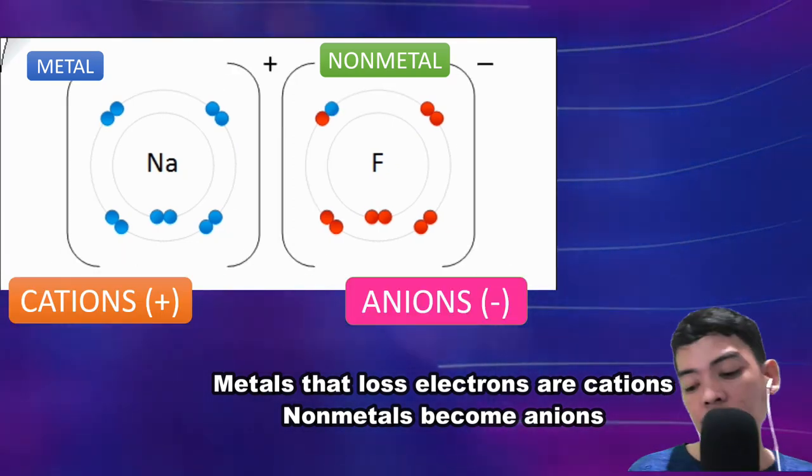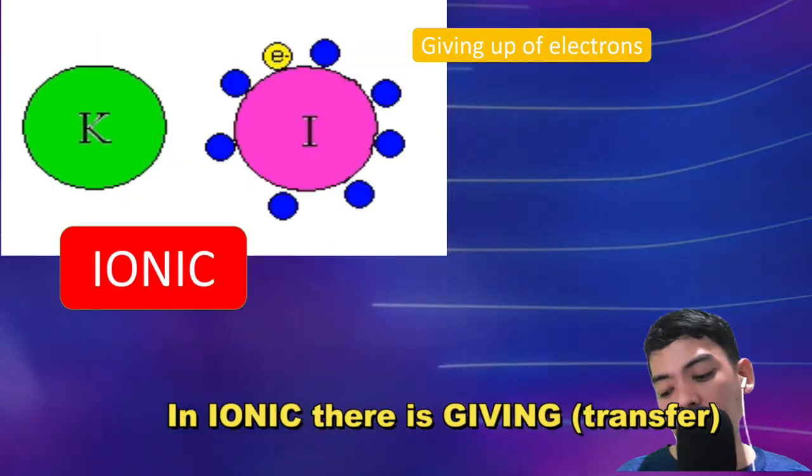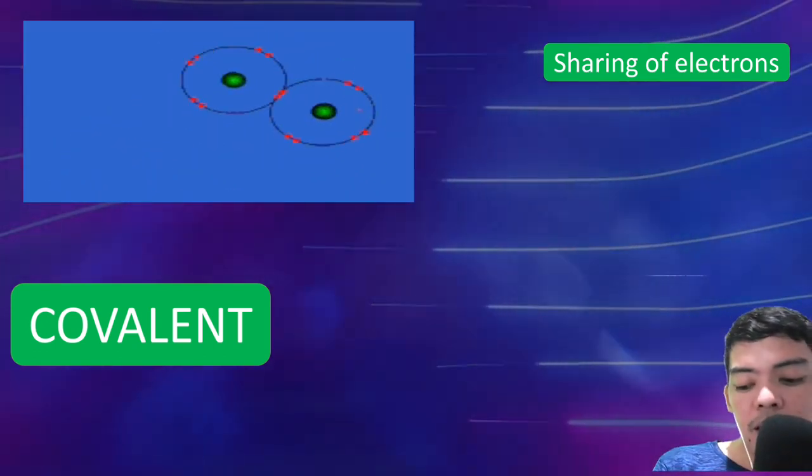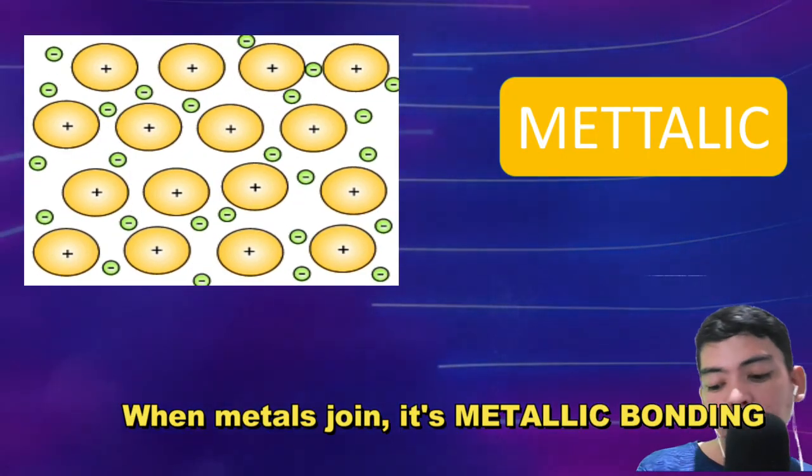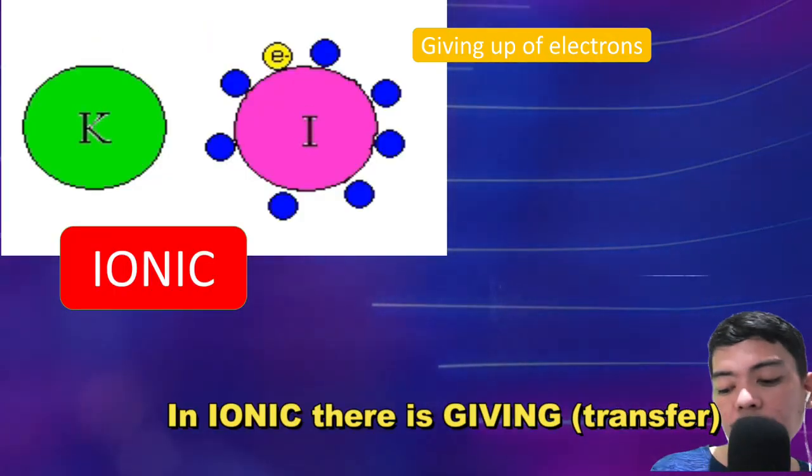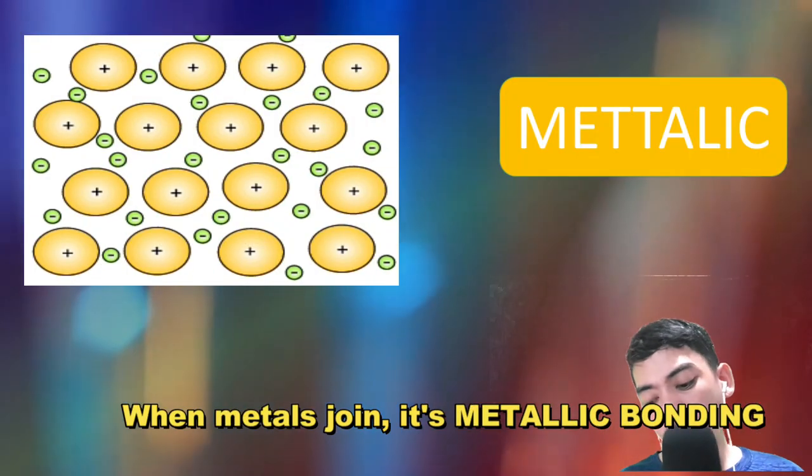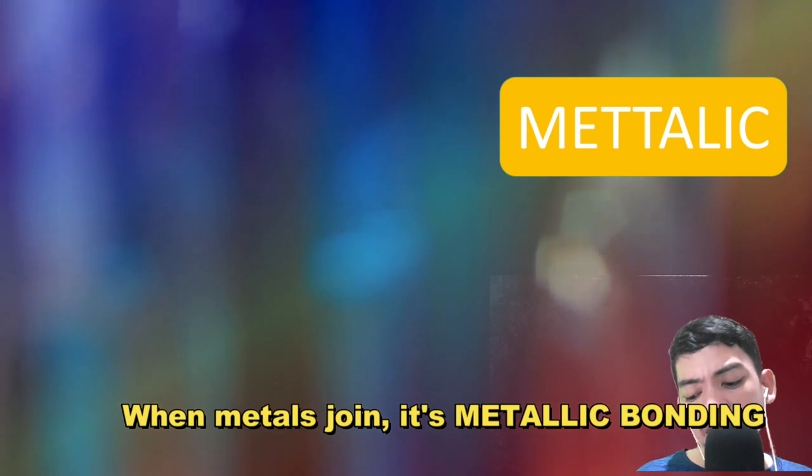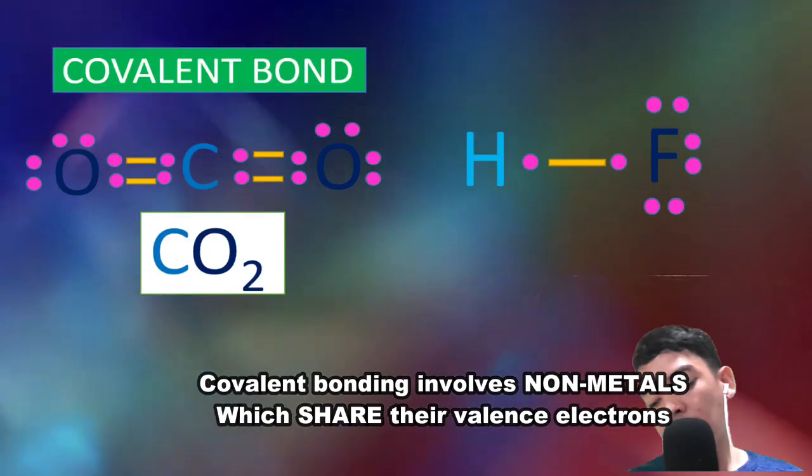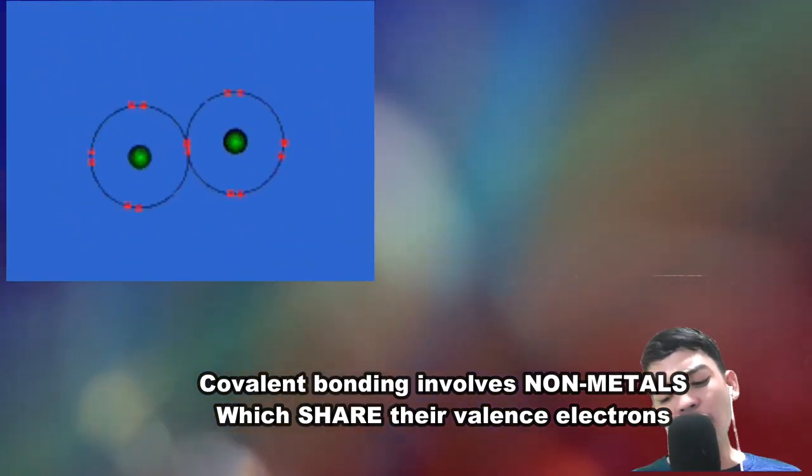Ionic, there is giving. Covalent, it's sharing. When metals join, it's metallic bonding. Covalent bonding involves non-metals which share their valence electrons.